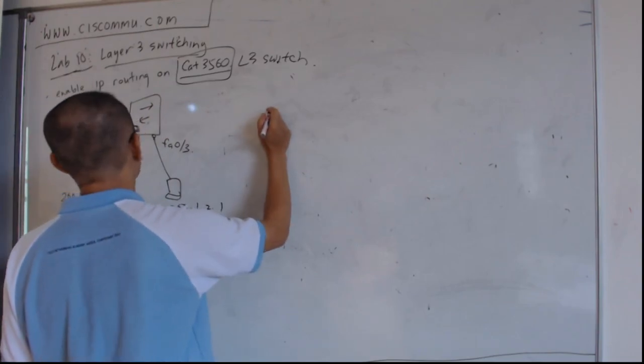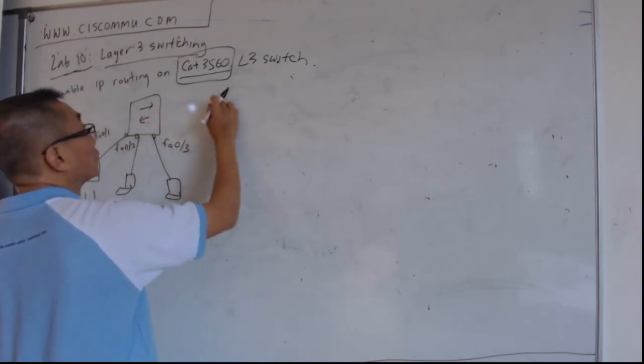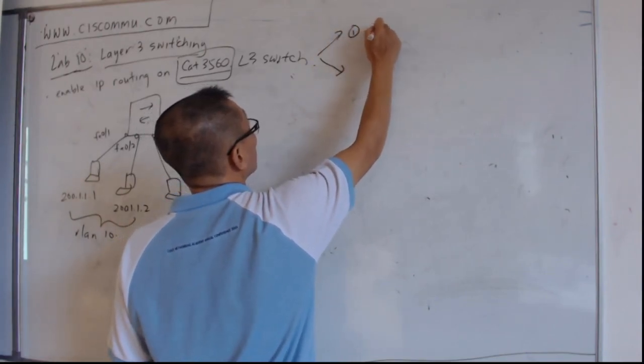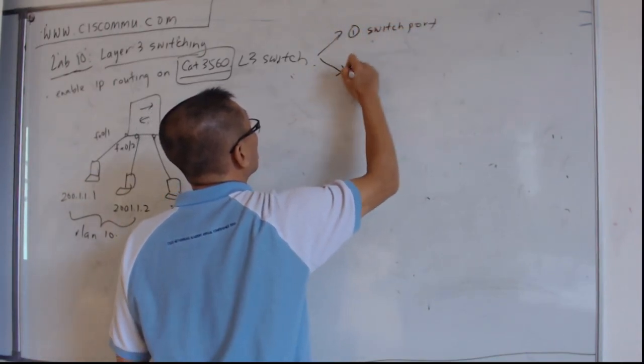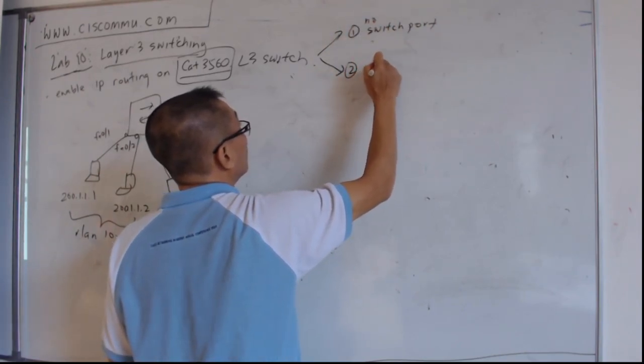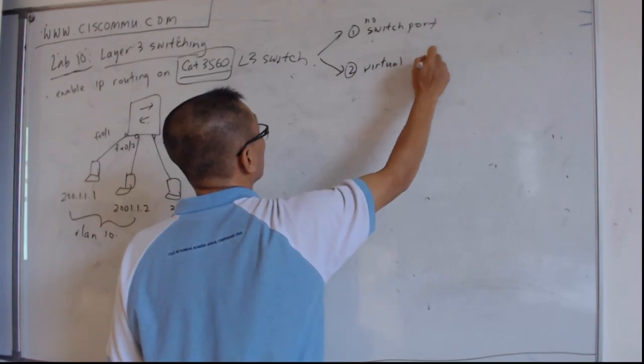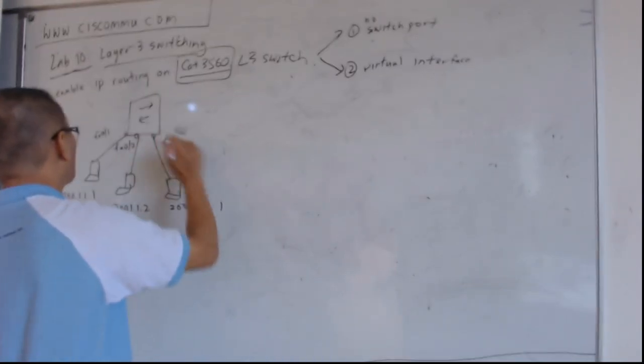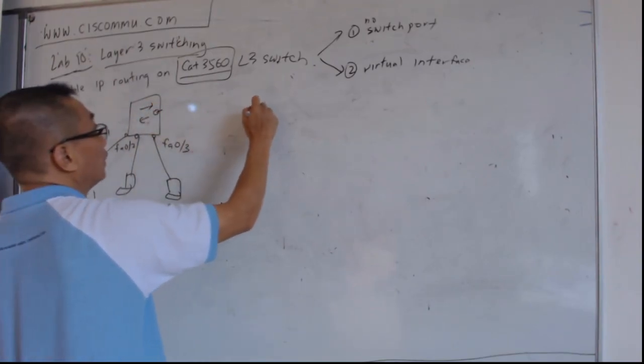So the configuration, first, this routing can be done using two methods. One is a switchport. The other method is no switchport. The other method will be virtual interface. So we're going to create a VLAN 10.